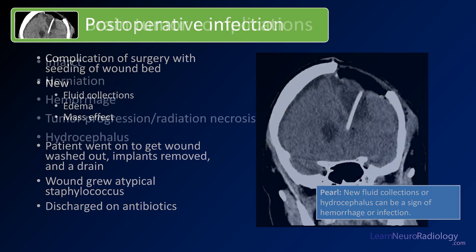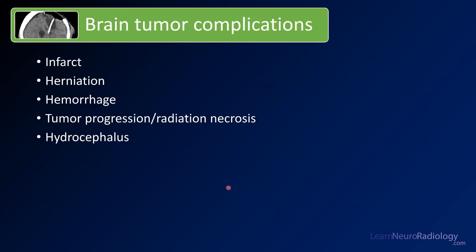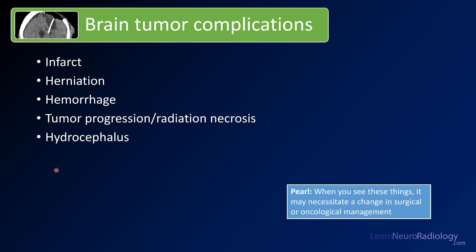Here we've seen some complications that can occur after brain tumors, particularly after treatment: infarcts, more mass effect and herniation, hemorrhage, rapid tumor progression or radiation necrosis, hydrocephalus, and infection. These are all things you should think about when evaluating post-brain tumor patients on CT. When you do see these things, talk to your surgeons and oncologist. The clinical scenario will help guide management — you're not necessarily making a treatment decision, but let them know that some urgent new treatment might be needed.